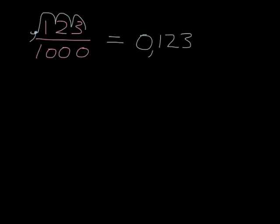Or if we had something like 5 over 1,000, well, we know what that should look like. It should be 0.005 because we just have a 5 in the thousandth place. But let's see how our little trick would do it.